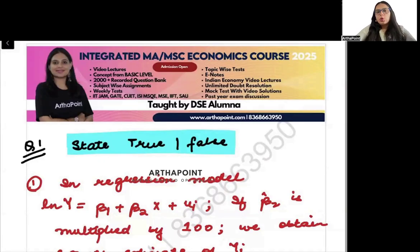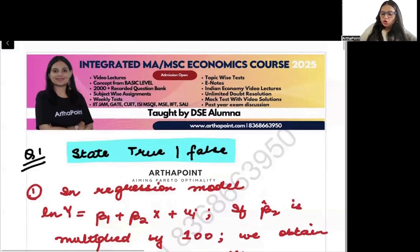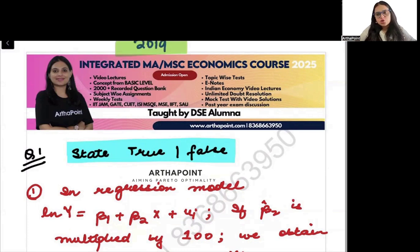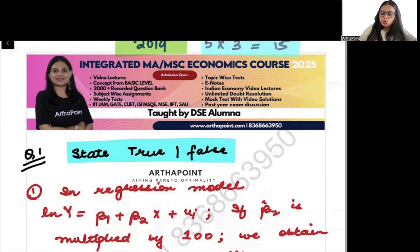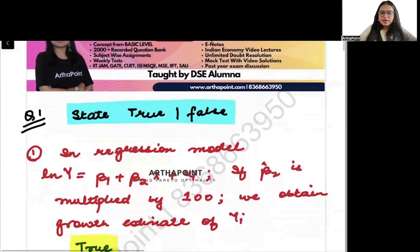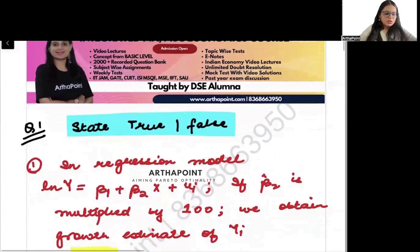In today's session we will go ahead and take the first question of the econometrics paper 2019. The first question of your econometrics paper will always be a true/false question. You will be given five true/false of three marks each, totaling 15 marks. Let us go ahead and read the first true/false for the day.